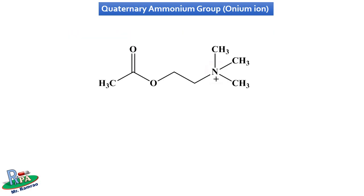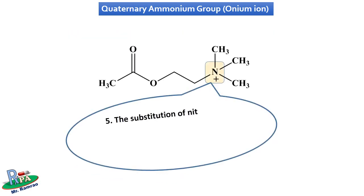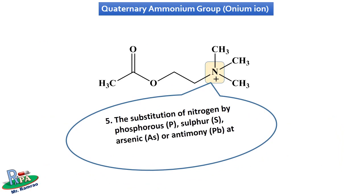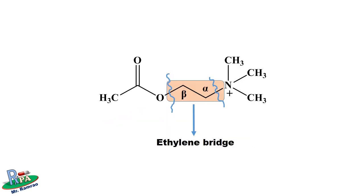The fifth point is that substitution of nitrogen by phosphorus, sulfur, arsenic, or antimony decreases the cholinergic activity — meaning nitrogen is essential for activity. This concludes the SAR points for the onium group. The second part of the acetylcholine molecule is the ethylene bridge, having alpha and beta carbons.